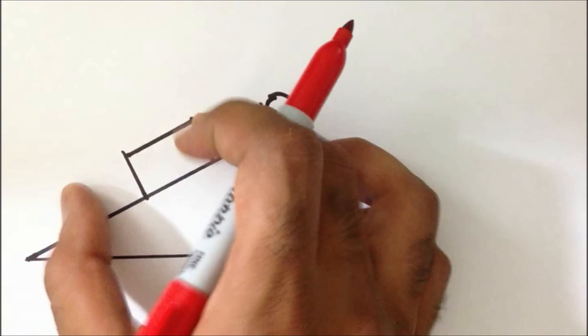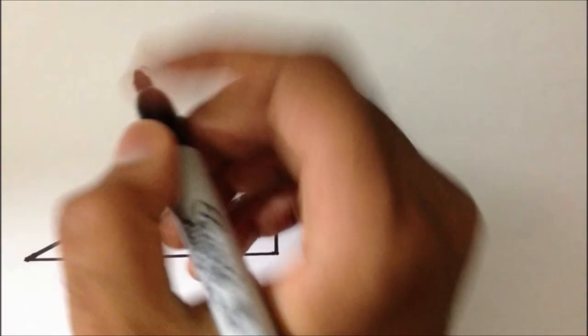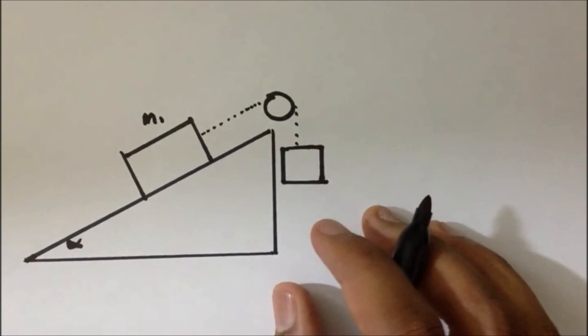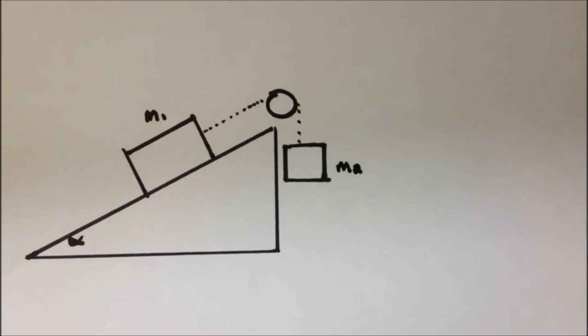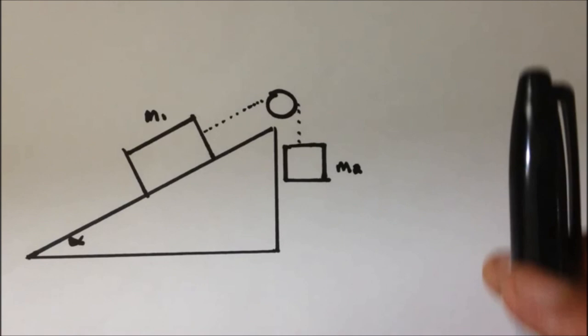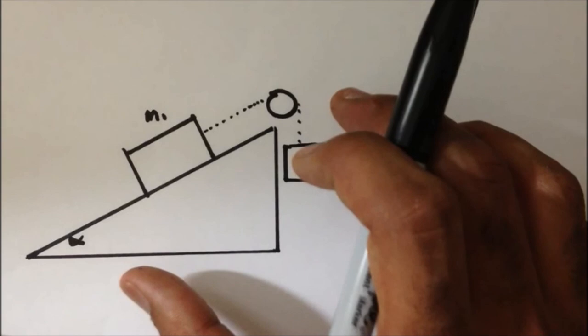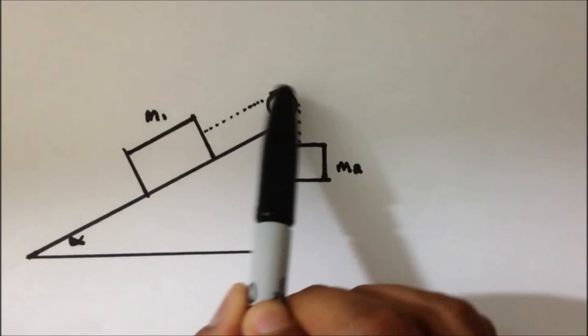This is mass M1 and this right here is mass M2. If this mass is going to move up the plane, you should remember Newton's second law. This implies that the net force is pointing up the plane because this object will accelerate up the plane.